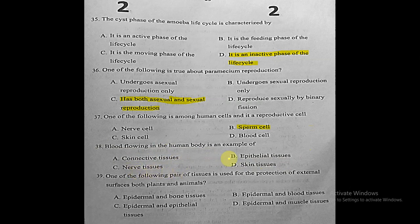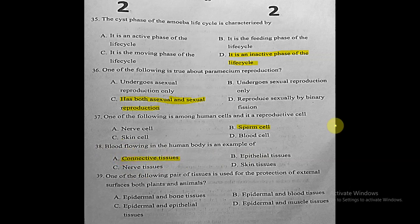Question thirty-eight: blood flowing in the human body is an example of what type of tissue? The correct answer is connective tissue, because blood connects and transports between parts of the body. Epithelial tissue is for protection, and nerve tissue is for signal transmission.